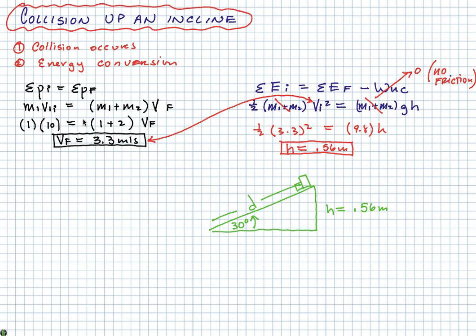Okay, so we're just going to be using trig. So we know that the height is going to be equal to the hypotenuse times the sine of theta. So d will be equal to 0.56 divided by the sine of theta. So d is equal to 1.1 meters.